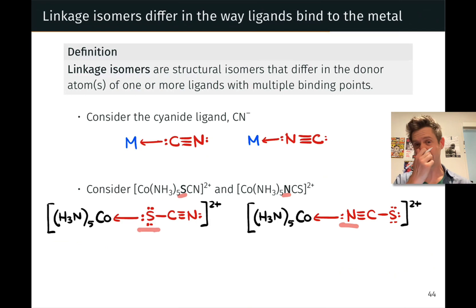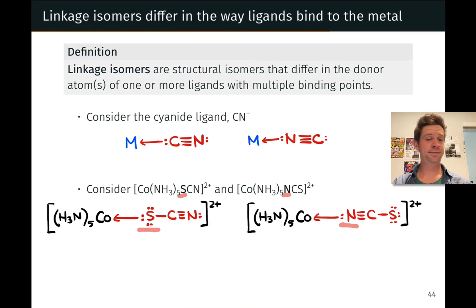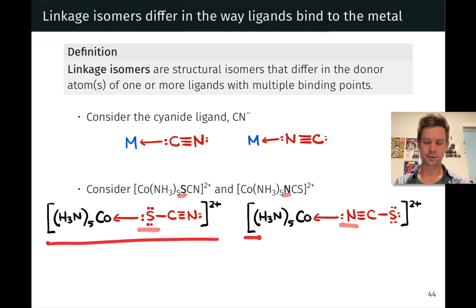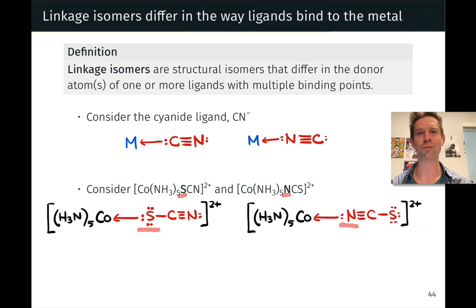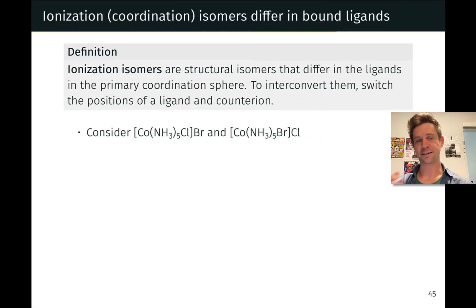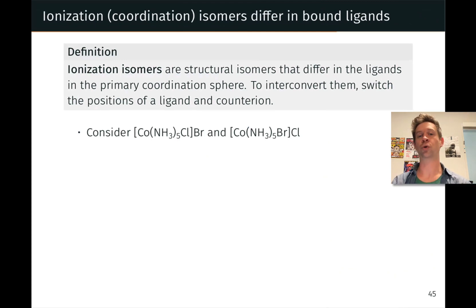The difference in linkage isomers is inside the primary coordination sphere, inside the brackets — there's an actual structural difference inside the complex ion. If the complex ion is charged, the counter ions may be exactly the same; for example, both complexes could have two bromide anions as counter ions. This brings us to the second type of structural isomerism in coordination compounds, known as ionization or coordination isomerism.